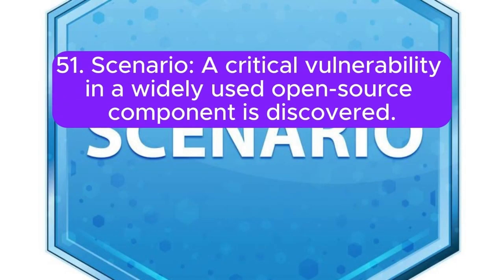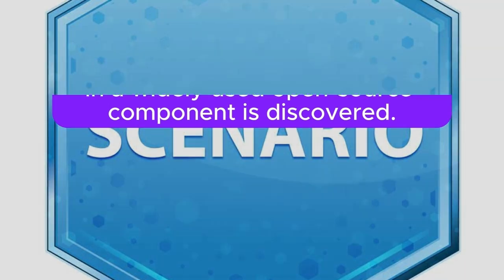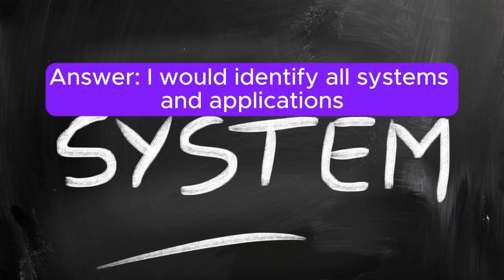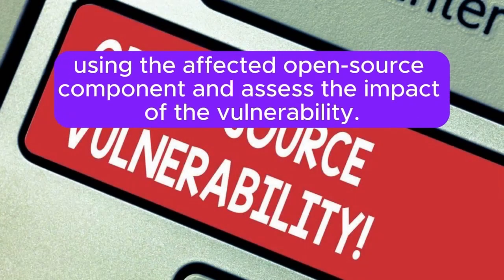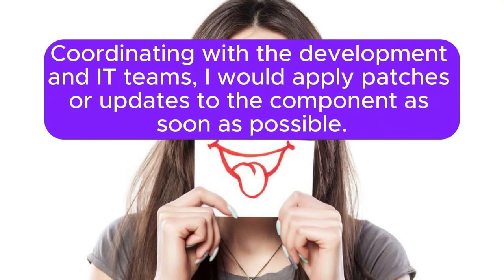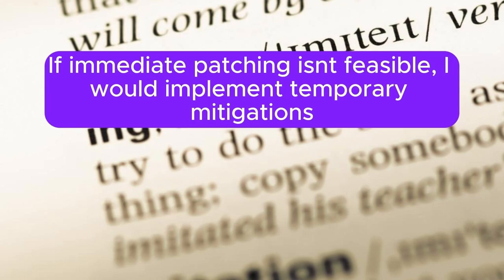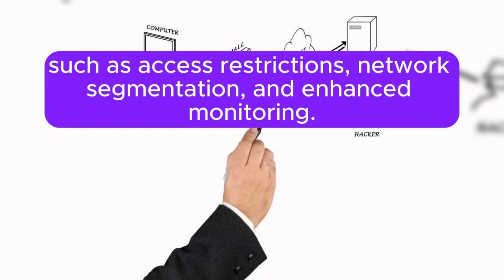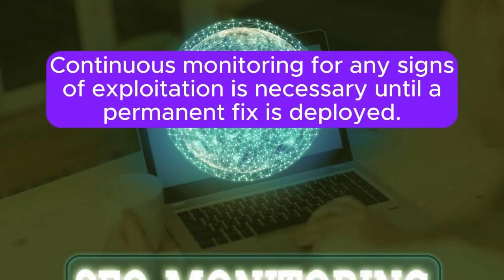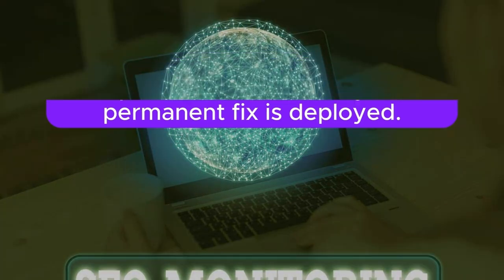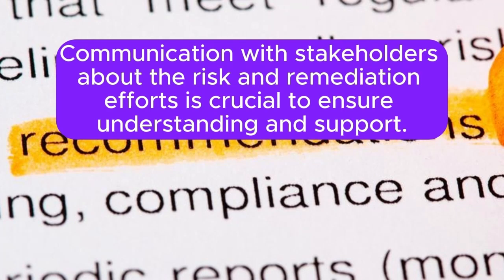Scenario 51: A critical vulnerability in a widely used open-source component is discovered. How do you respond? I would identify all systems and applications using the affected open-source component and assess the impact of the vulnerability. Coordinating with the development and IT teams, I would apply patches or updates to the component as soon as possible. If immediate patching isn't feasible, I would implement temporary mitigations such as access restrictions, network segmentation, and enhanced monitoring. Continuous monitoring for any signs of exploitation is necessary until a permanent fix is deployed. Communication with stakeholders about the risk and remediation efforts is crucial to ensure understanding and support.